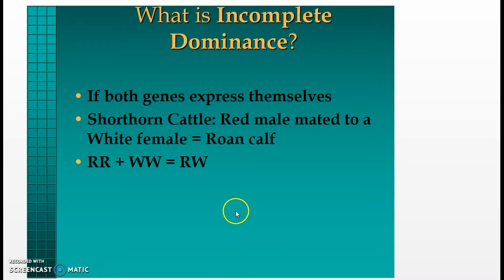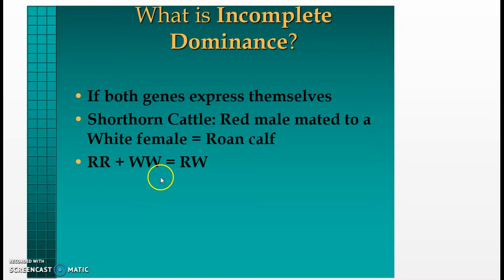What is incomplete dominance? This is when both genes express themselves. In shorthorn cattle, a red male mated to a white female equals a roan calf. To have a red male you need two uppercase R's; for a white female you need two uppercase W's. When mated together, all offspring will be roan because both genes express themselves.